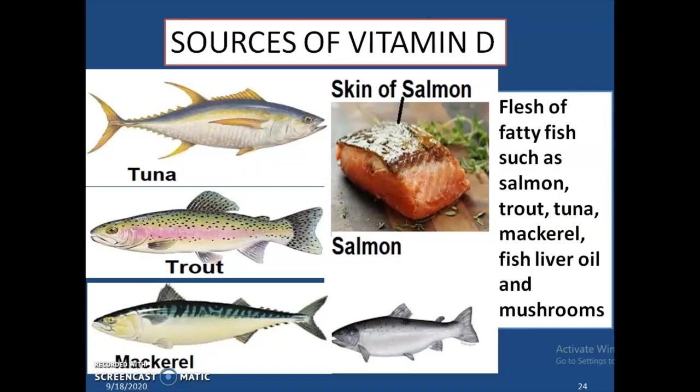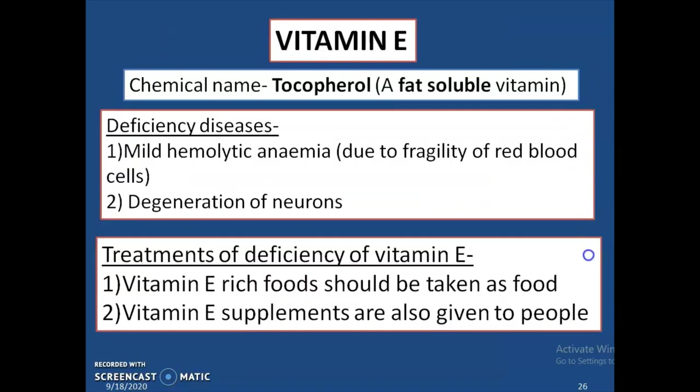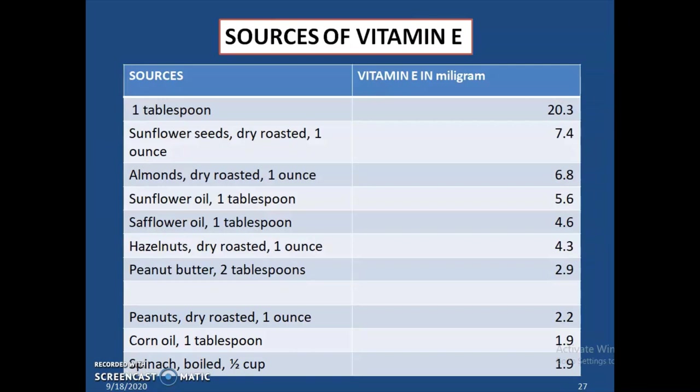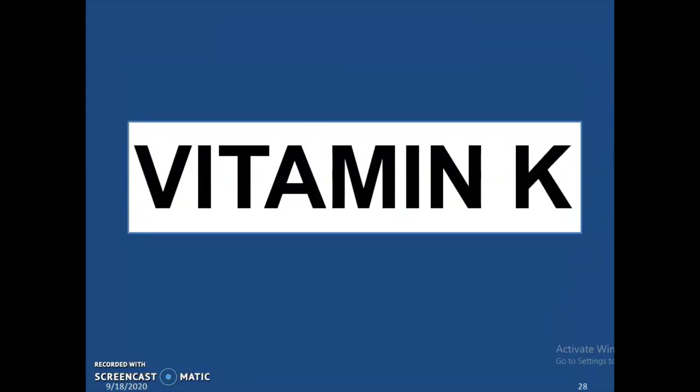Vitamin E is also known as tocopherol. It is a fat-soluble vitamin. Deficiency of vitamin E causes mild hemolytic anemia due to fragility of red blood cells and degeneration of neurons. Treatment includes taking vitamin E-rich food and vitamin E supplements. Sources of vitamin E include sunflower seeds, almonds, sunflower oil, safflower oil, hazelnuts, peanut butter, peanuts, corn oil, and spinach.